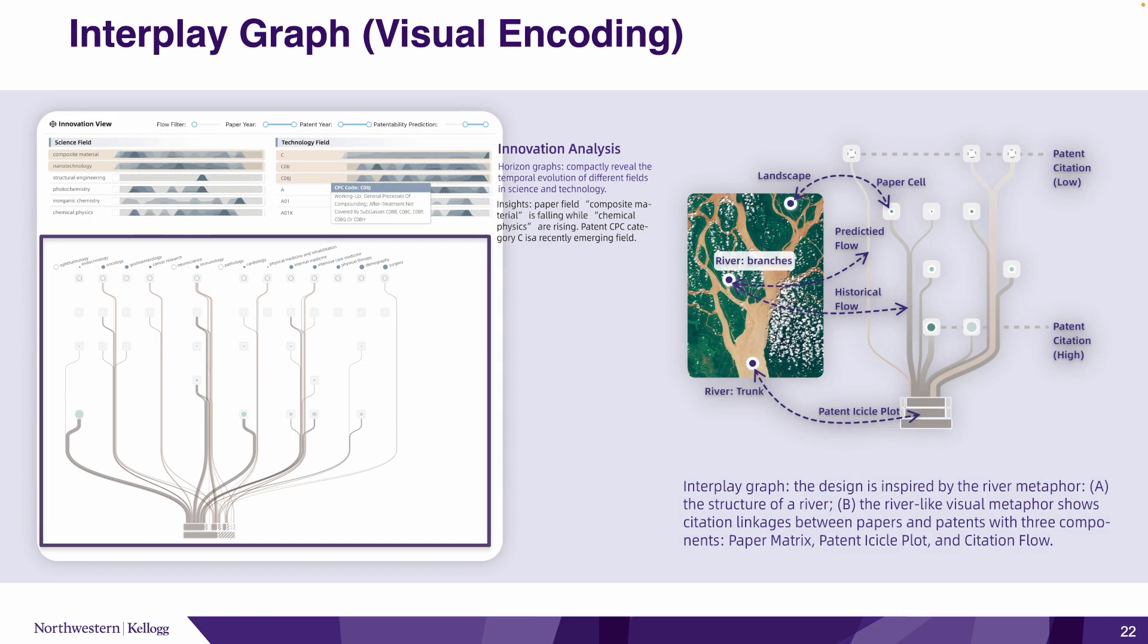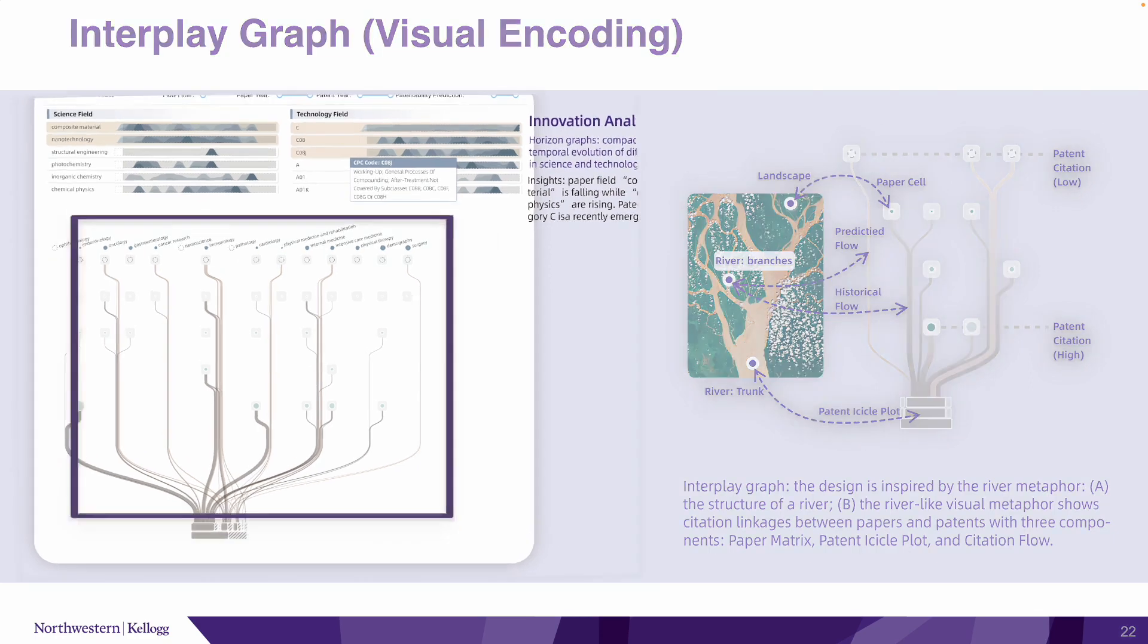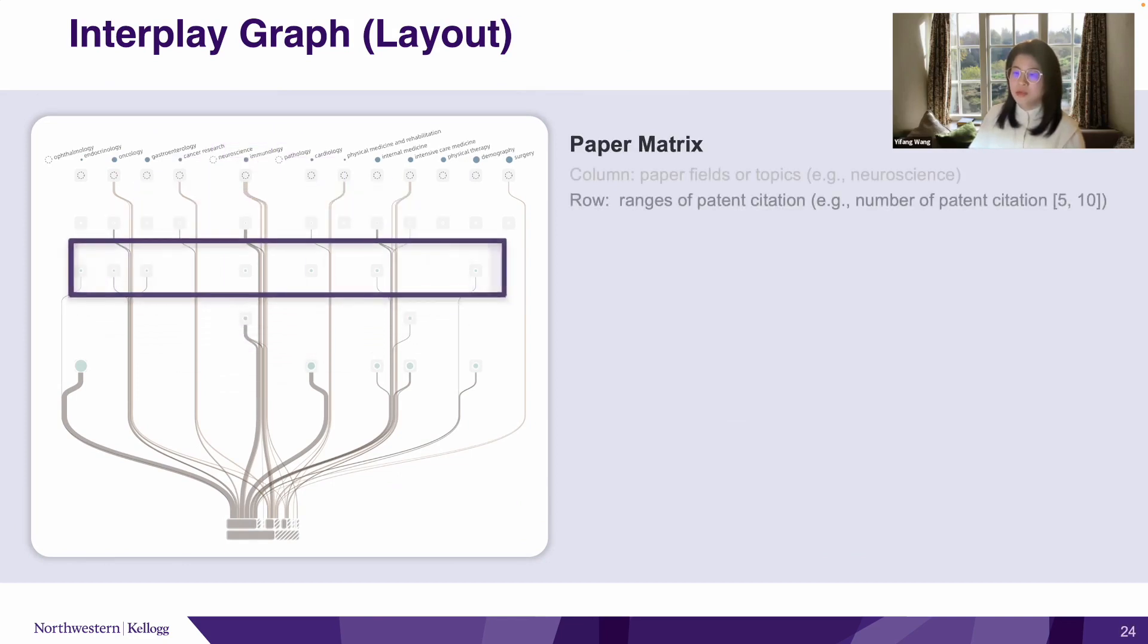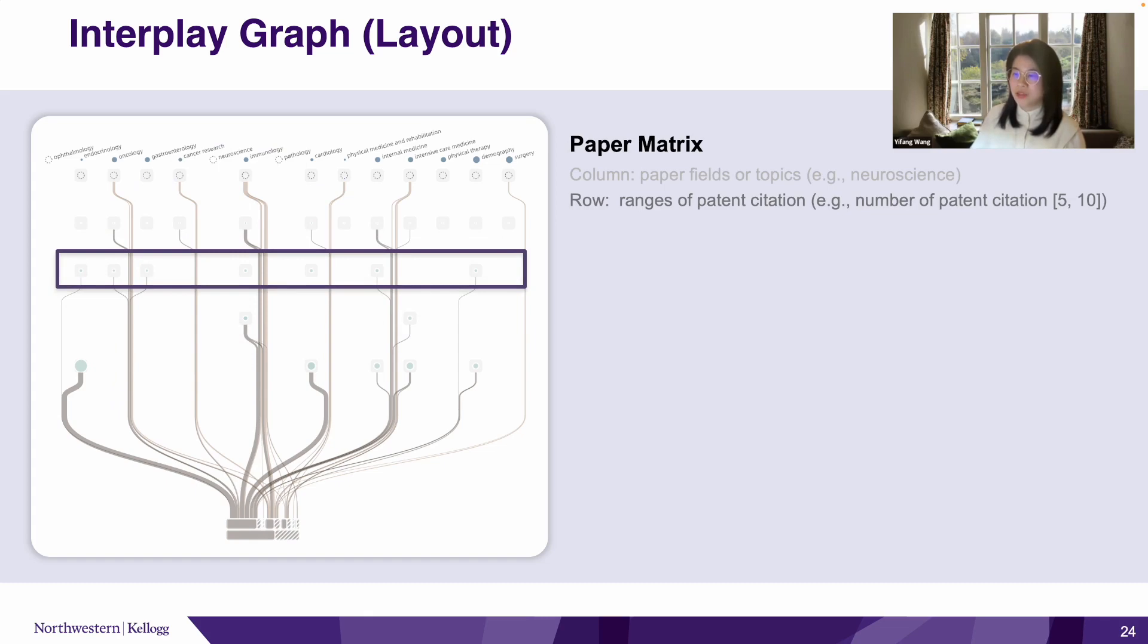The interplay graph shows the citation linkage from patents to papers. The design of the interplay graph is inspired by the river metaphor. It consists of three parts. First, in the paper matrix, each column represents a paper field, and the row represents different ranges of patent citations. The lower the row, the higher the number of patent citations these papers have, and also, the closer these papers are to the frontier of science and technology.